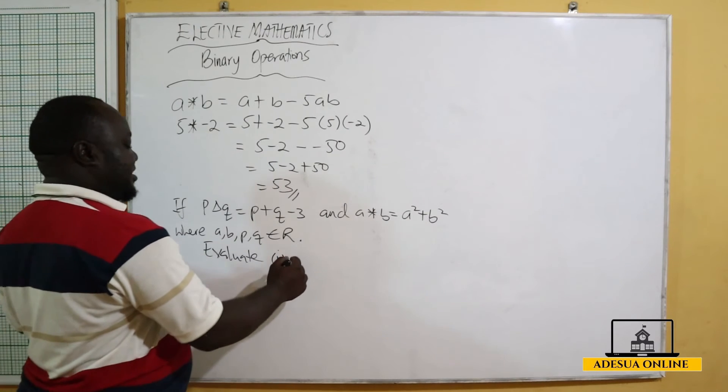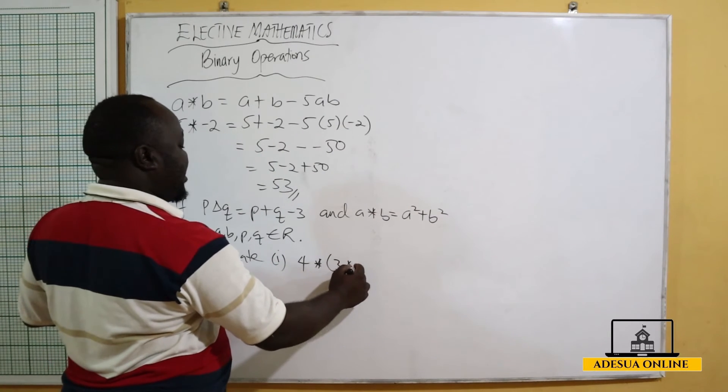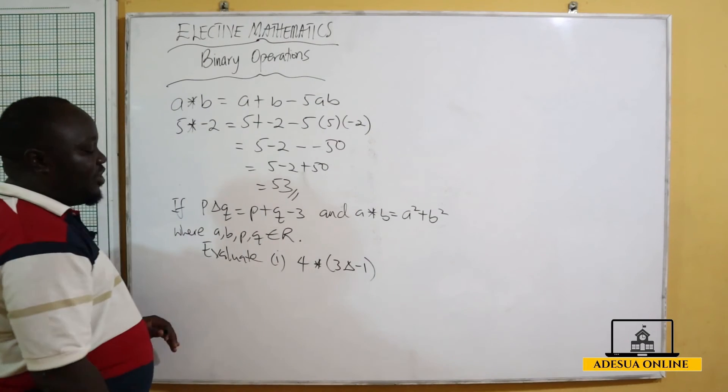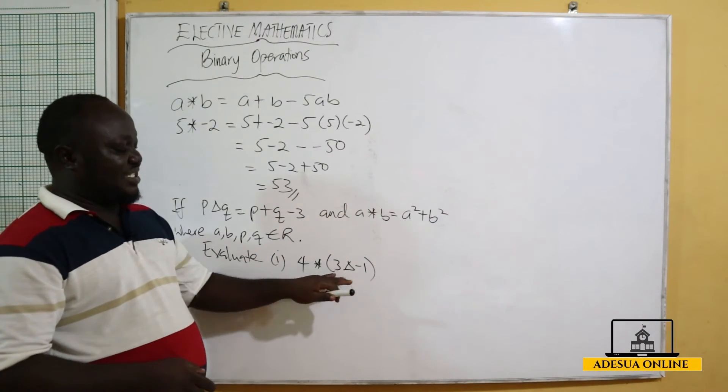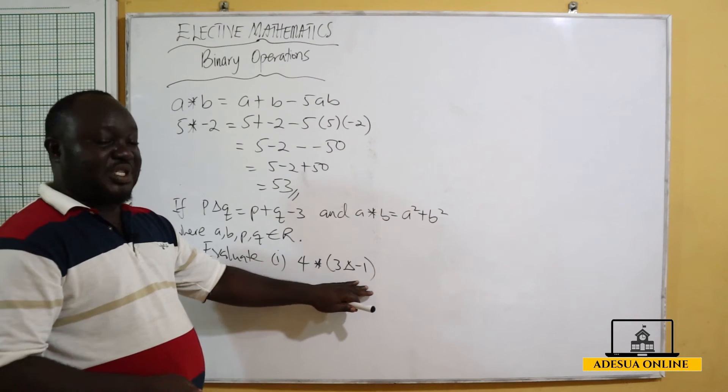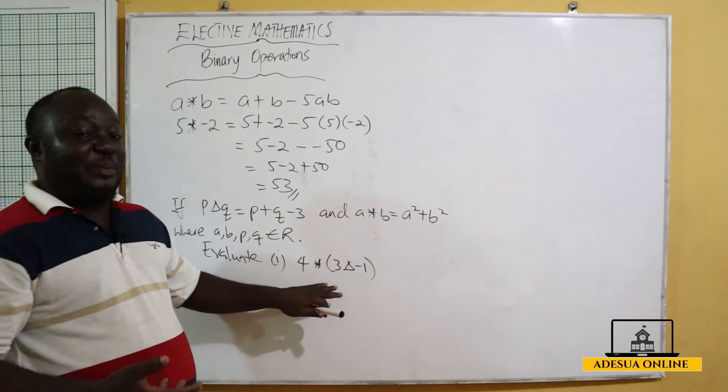Evaluate, let's say, 4 star 3 triangle negative 1. So 4 operating on 3 operation 1. But take note of the symbols here. Because I've put this into brackets, normally we work with the bracket first.